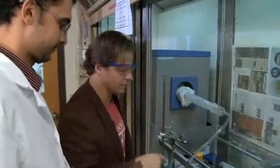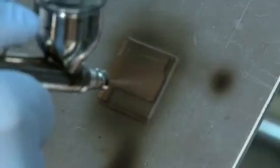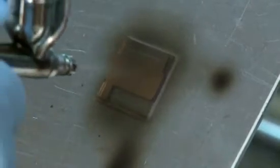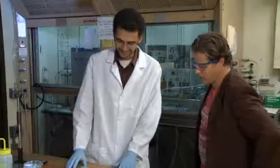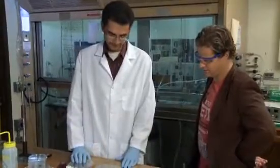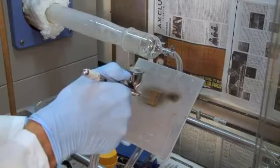This spray paint could be part of the future of solar power. With support from the National Science Foundation, chemical engineer Brian Korgel and his team at the University of Texas are developing spray-on solar cells.